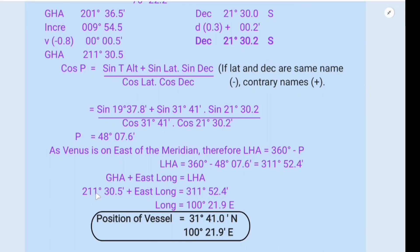So if this goes on this side, so 311 degrees 52.4 minus 211 degrees 30.5, we get the longitude 100 degrees 21.9 minutes.